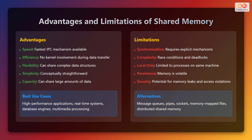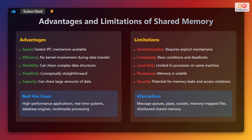Limitations of shared memory. It requires explicit synchronization mechanisms to avoid race conditions and deadlocks. It is limited to processes on the same machine. The memory is volatile, and there is potential for memory leaks and access violations. Some alternatives include message queues, pipes, sockets, memory-mapped files, and distributed shared memory.